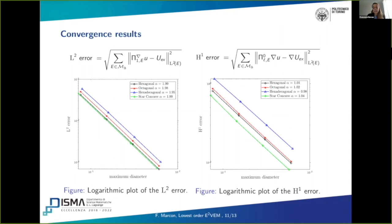Finally, these are the convergence results that we obtained. We denoted the convergence rates by alpha, and we approximately obtain two for the L2 error and one for the H1 error, which are the results that we expect. And here, I wanted also to write the way in which we approximate and compute the L2 error and the H1 error.